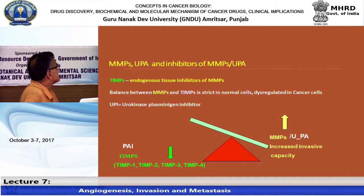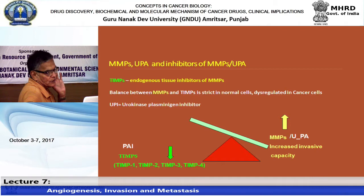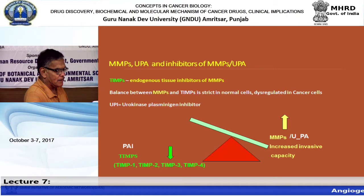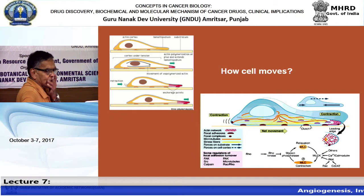The balance between MMPs and TIMPs (tissue inhibitors of metalloproteinases) is critical. MMPs enhance matrix degradation activity while TIMPs reduce it. They must maintain a balance - working in coordination.